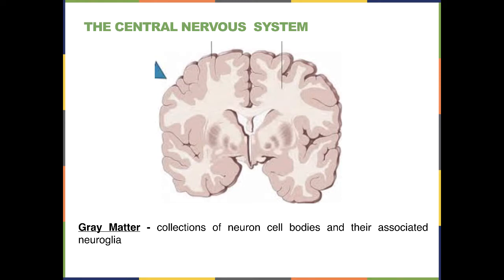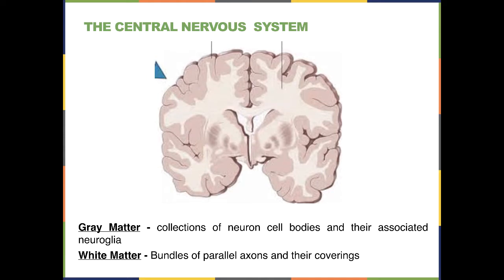The central nervous system can be divided up in many ways. One way is between the gray matter and the white matter. The gray matter is all along the outside and consists of all the neuron cell bodies and their associated neuroglia — another word for associated cells like astrocytes and oligodendrocytes. The white matter is more in the center and consists of bundles of parallel axons and their coverings.